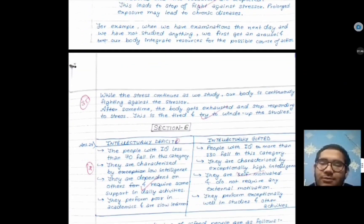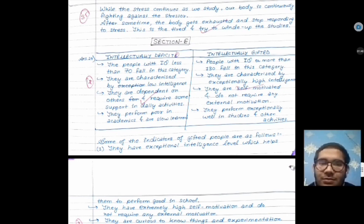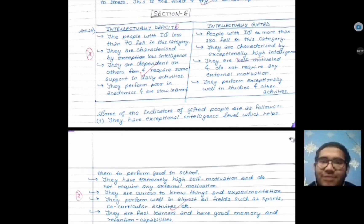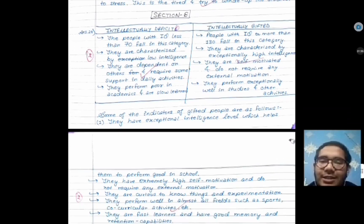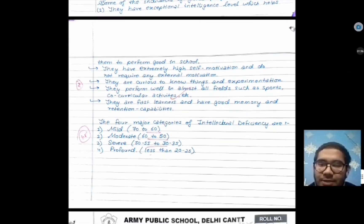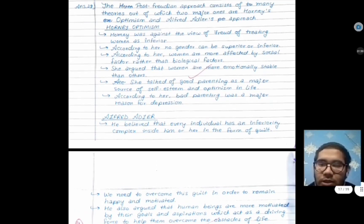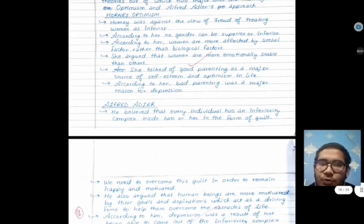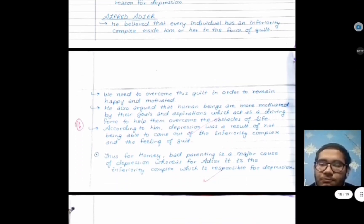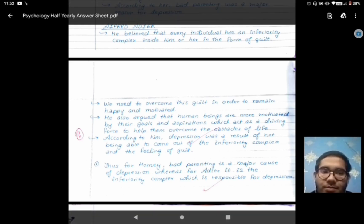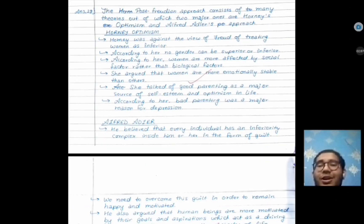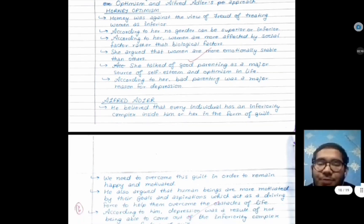This is Section E, six markers. In psychology we don't have five markers, this is the difference. This is our post-Freudian approach. At the end, we have this post-Freudian approach question which was of six marks, and I got full six marks in this.